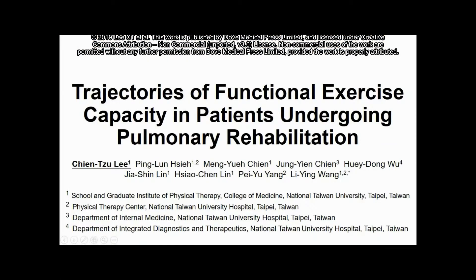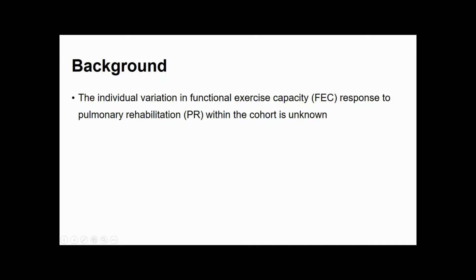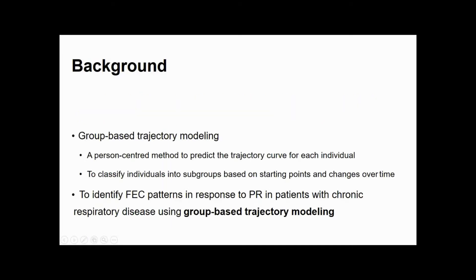Pulmonary rehabilitation is now considered fundamental when managing patients with chronic respiratory disease. However, the individual variation in Functional Exercise Capacity response to pulmonary rehabilitation within the cohort is unknown. Group Based Trajectory Modeling is a person-centered method to predict the trajectory curve for each individual, classifying individuals into subgroups based on starting points and changes over time. Therefore, this study aimed to identify Functional Exercise Capacity patterns in response to pulmonary rehabilitation using Group Based Trajectory Modeling.